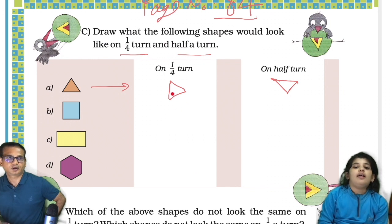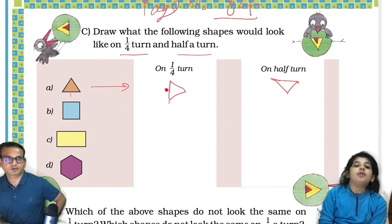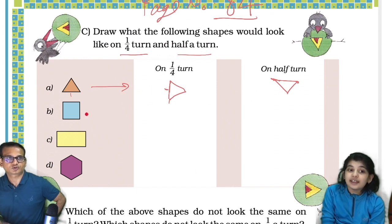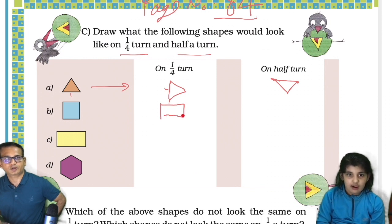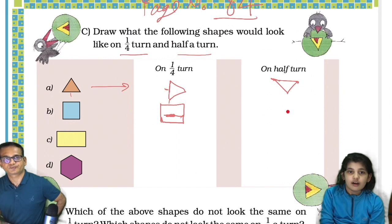Okay, quarter turn — same. Half turn — same. Square? No, I'm talking about the B1 square. All are same for the square. I'm not drawing it properly — let me edit. Okay, now this is the square.